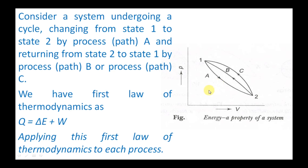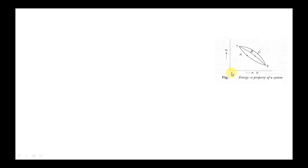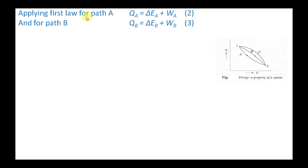The first law of thermodynamics is written as Q = ΔE + W, where heat transfer equals internal energy change plus work transfer. Applying this to path A: Q_A = ΔE_A + W_A. Applying it to path B: Q_B = ΔE_B + W_B.